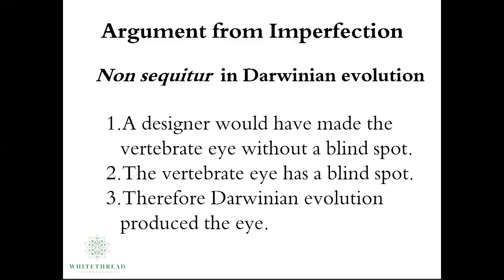This is a formal fallacy referred to as non sequitur, which is Latin for 'it does not follow,' because the premises in this syllogism do not lead to the conclusion that Darwinian evolution produced the eye or the biological trait. If we look at the scientific literature, it contains no evidence that natural selection working on random variations can produce from scratch an eye with a blind spot, an eye without a blind spot, an eyelid, a lens, a retina, or any other trait. Such evidence is lacking.